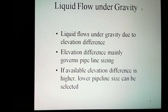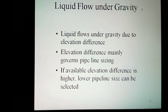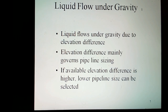Liquid flow under gravity: liquid flows under gravity due to the elevation difference between the start point, always at higher elevation, and the end point at lower elevation — that is the difference in potential energy. The elevation difference mainly governs the pipeline sizing. Additional offsets due to pressure conditions at the start or end point also matter. If the available elevation difference is higher, a high liquid velocity with high allowable pressure drop can be considered, and thus a lower pipeline size can be selected.